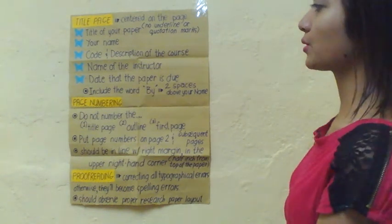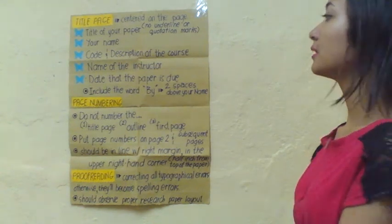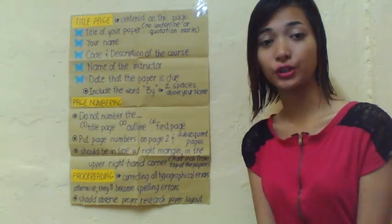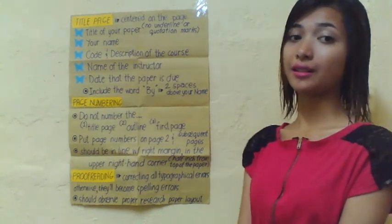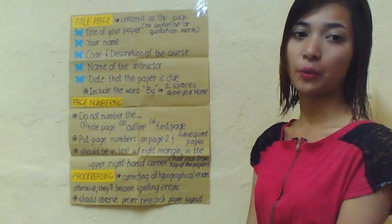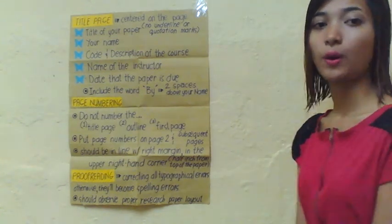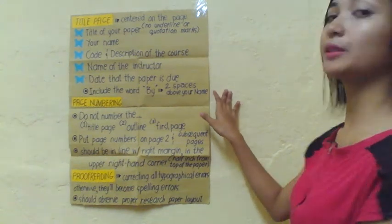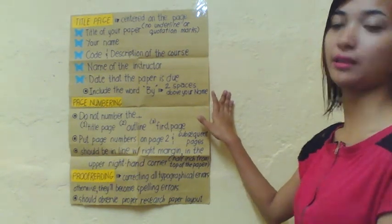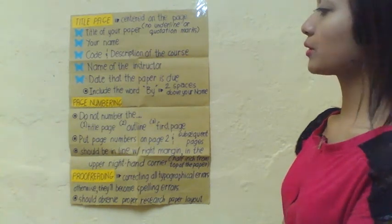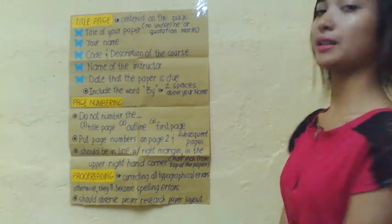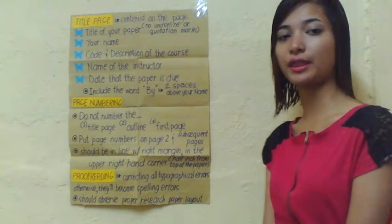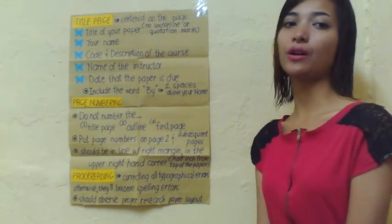On the last part, you also include the date that the paper is due — for example, February 2015. On the title page, we put that date at the bottom of the page. We also include the word 'by' two spaces above our name so that the reader of the research or thesis will know who the researchers are.